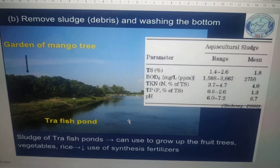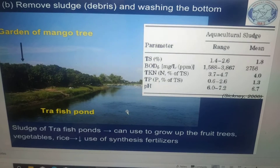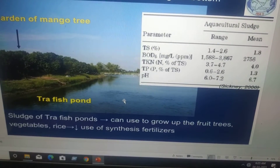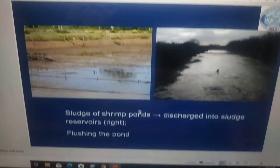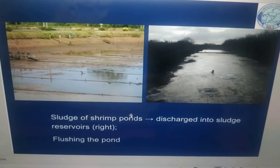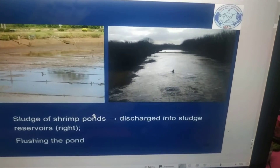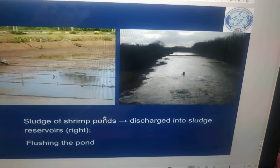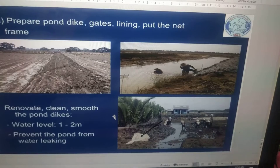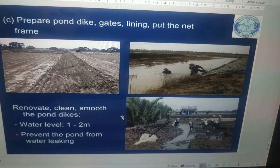Remove sludge, that is debris, and wash the pond bottom. Sludge from fish ponds can be used to grow fruit trees, vegetables, and rice. The sludge from shrimp ponds is discharged into a sludge reservoir. Flushing the pond: sludge is removed and pumped or transferred to a reservoir pond. Prepare pond dikes, guards, lining, and put the net frame. Renovate and smooth the pond dikes.